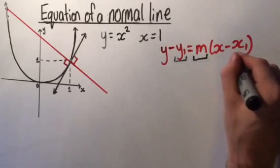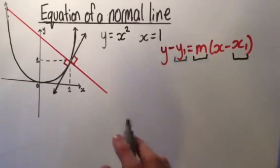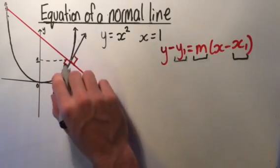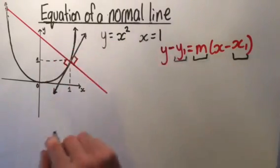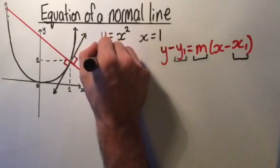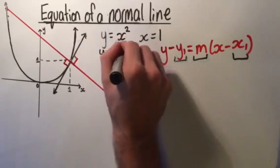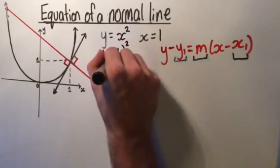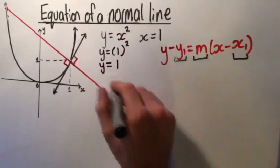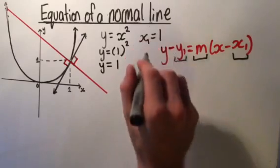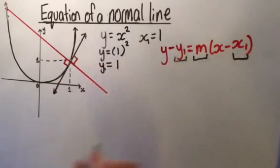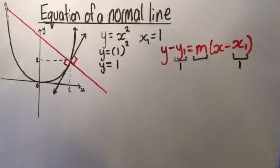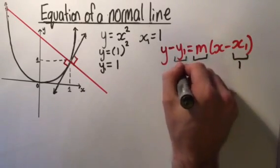We're trying to find y1, m, and x1. x1 and y1 just represent a single point on this line. Our point is x equals 1, and when x equals 1, y equals 1 squared, which is 1. So x1 equals 1 and y1 equals 1. The only thing we haven't filled out is our gradient.